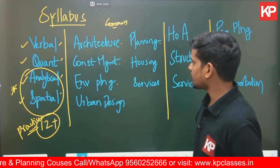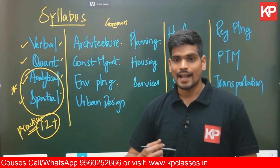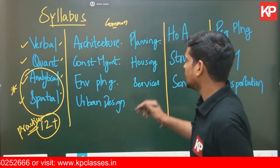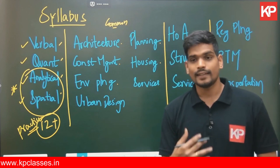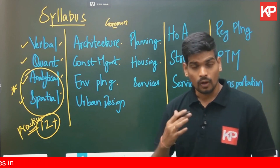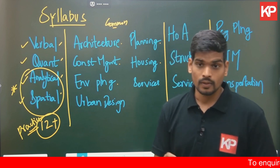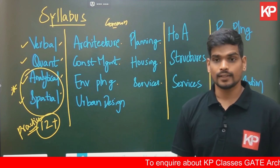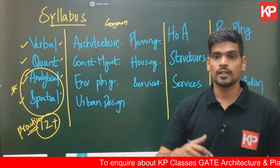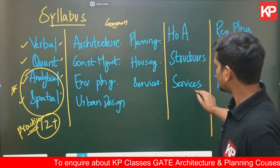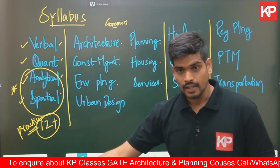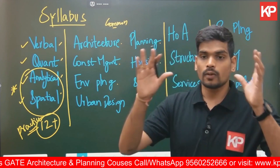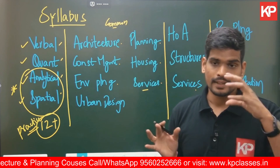Section four covers landscape and urban design, including landscape architecture and theories of urban design. Section five is planning, covering basics of planning, planning theories, principles, and guidelines. Section six is housing, covering real estate valuation, estimation of housing and dwelling units, and housing standards. Section seven is services and infrastructure, covering water supply, solid waste management, sewage treatment, HVAC, and basics of transportation.